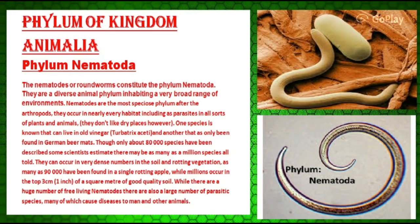First of all, we will discuss what is phylum Nematoda. The nematodes, or roundworms, constitute the phylum Nematoda. They are a diverse animal phylum inhabiting a very broad range of environments. They do not like dry places; however, one species is known that can live in old vinegar, and another is only found in German beer mats.